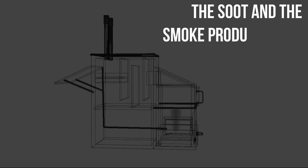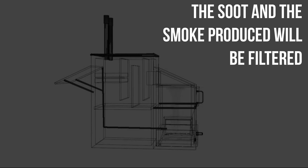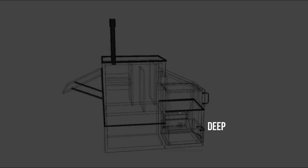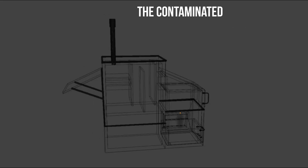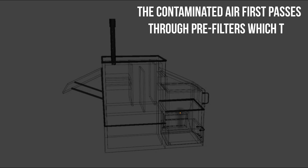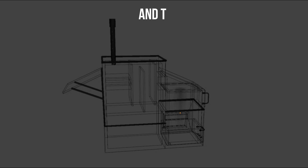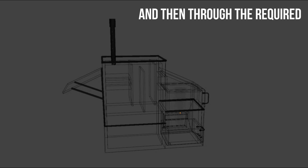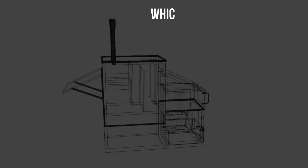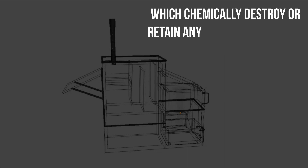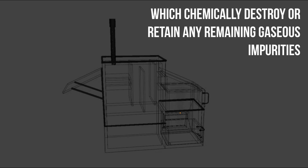After the waste has been pyrolyzed, the soot and smoke produced will be filtered. The smoke is first passed through the deep bed system. In this system, the contaminated air first passes through pre-filters, which remove the suspended particles, and then through the required chemical media webs, which chemically destroy or retain any remaining gaseous impurities.